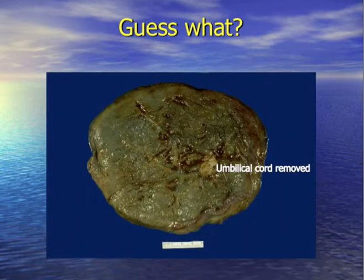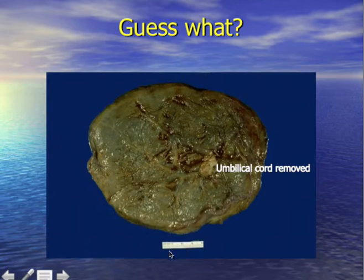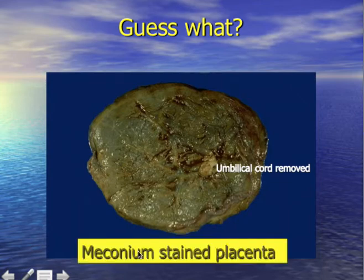Here we are looking at the fetal surface of a placenta — the umbilical cord and membranes have been removed. You can see a remarkably green stain. This is a meconium-stained placenta shortly after the baby was born. The baby showed decelerations during labour and hence produced meconium.